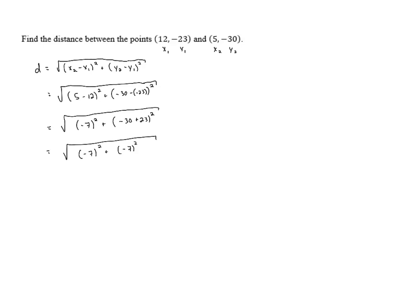So we've got (-7)² plus (-7)² under the radical and (-7)² is 49. So we've got 49 plus 49 which is 98.